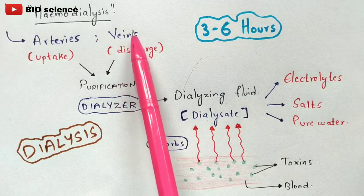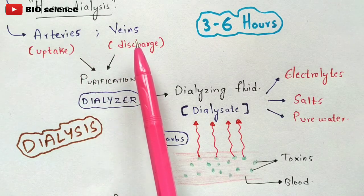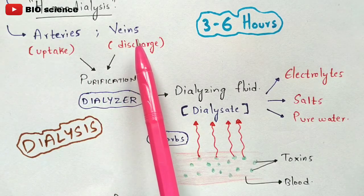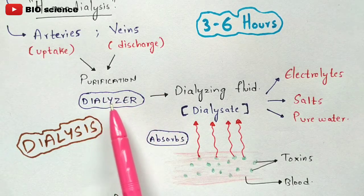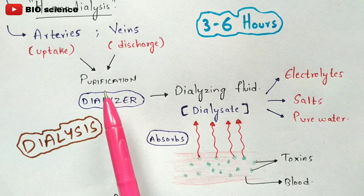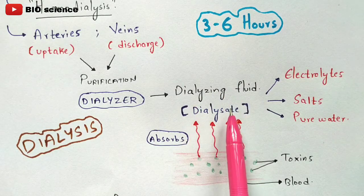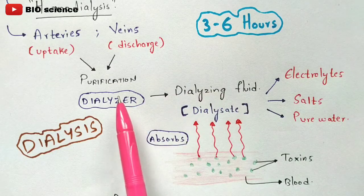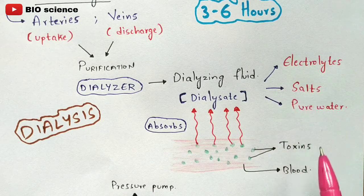After purification, the pure blood is sent back into the veins. So to summarize: impure blood is extracted from the arteries, purification is done in the dialyser, and then the pure blood is sent into the veins. Now, what is the process done inside the dialyser to achieve this purification? We use a dialysing fluid called dialysate.